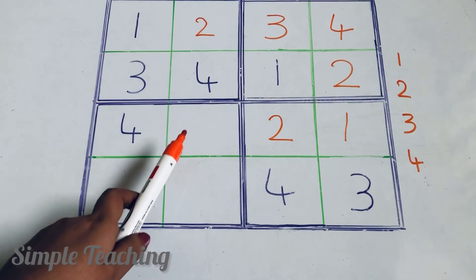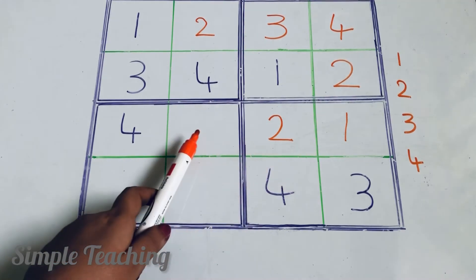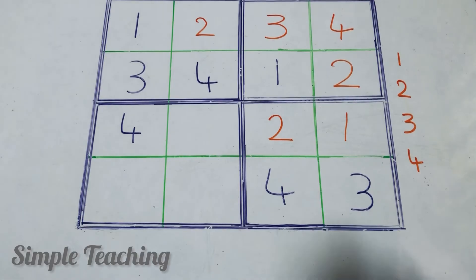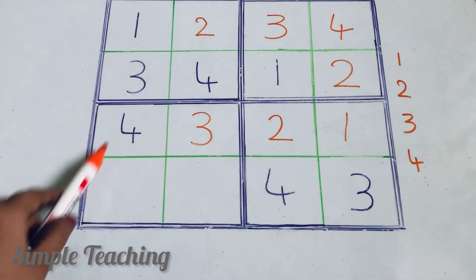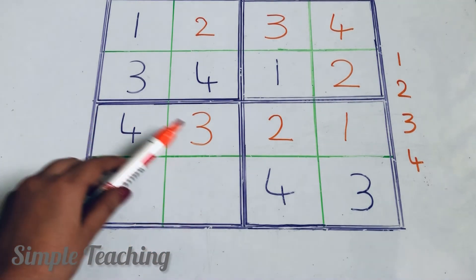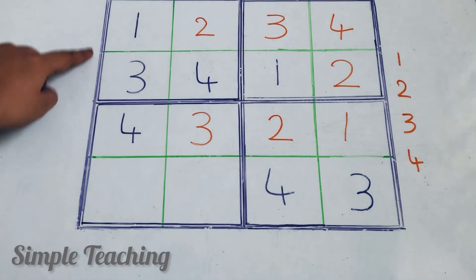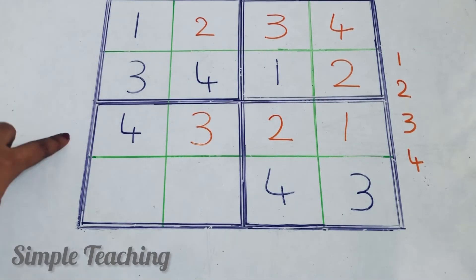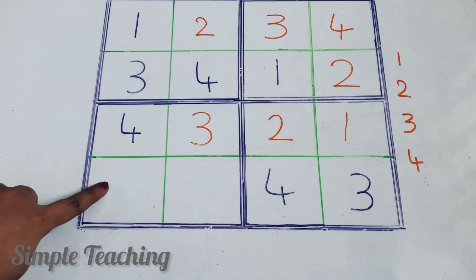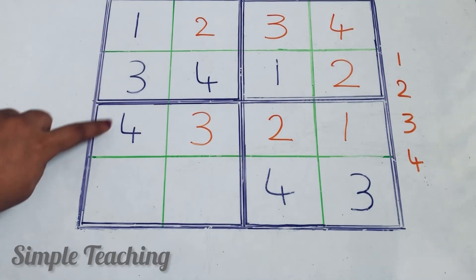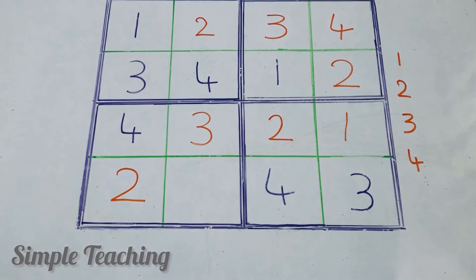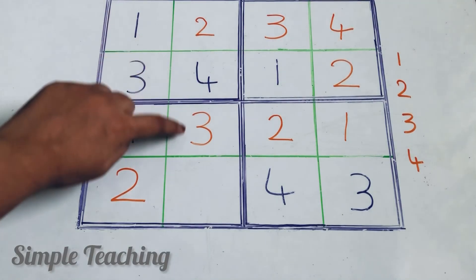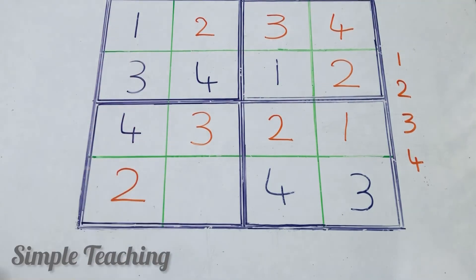In this row only one cell is empty, so we can find it easily. What is the missing number? 1, 2, 3, 4 — 3 is missing. Now take this box — you can fill the numbers here, or take it column-wise. Here 1, 3, 4 are present — what is missing? 2. And here 2, 4, 3 are present — what is missing? 1. So 1 is missing.